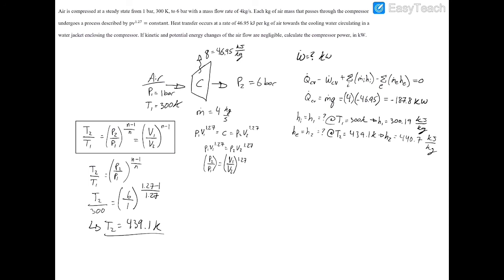Now we have all of our unknowns, and we can plug them right back into our energy balance equation above. We have negative 187.8, and that's kilowatts, minus our power, which we're going to solve for in a second. Plus, we have one inlet and one outlet, so that's just going to be the mass flow rate, which was 4. And that's going to be 300.19, which is the inlet enthalpy, minus the outlet enthalpy of 440.7, and that's kilojoules per kilogram. And all of that is equal to zero. Then you just rearrange for the power, and you have that the power of the control volume is equal to negative 750 kilowatts.